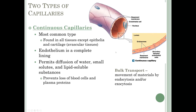You can also have bulk transport in continuous capillaries in some areas — movement of materials by endocytosis and/or exocytosis, where little endosomes take packets of material from the blood across the endothelial cell to the other side. The primary transport in continuous capillaries, though, is diffusion of water, small solutes, and lipid-soluble substances.